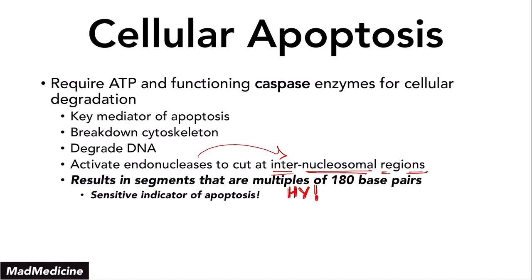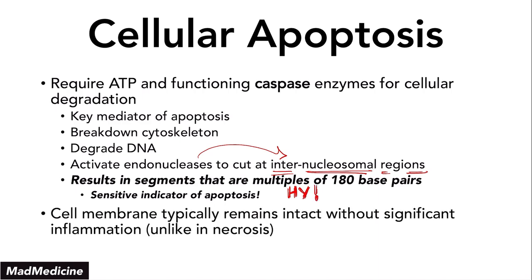Unlike in necrosis, the cell membrane remains intact during apoptosis. Because the cell membrane remains intact, you are not releasing intracellular components. Because you are not releasing those intracellular components, you will have no inflammation. Those intracellular components are very pro-inflammatory, so when they are released from inside the cell they lead to inflammation — but in apoptosis that does not happen.